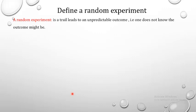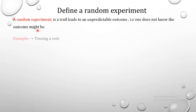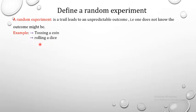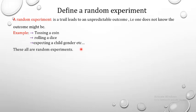Define a random experiment: it is a trial that leads to an unpredictable outcome — that is, one does not know what the outcome might be. For example, tossing a coin gives two choices: head or tail. Rolling a die gives six choices: one, two, three, four, five, and six. Expecting a child's gender — male or female — these are all random experiments.